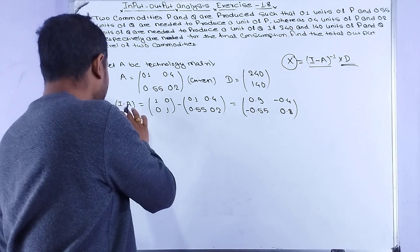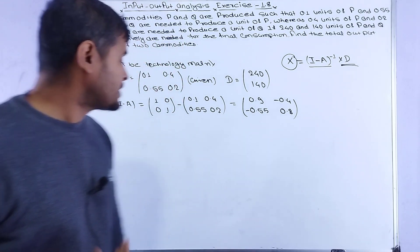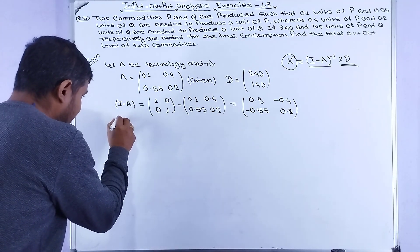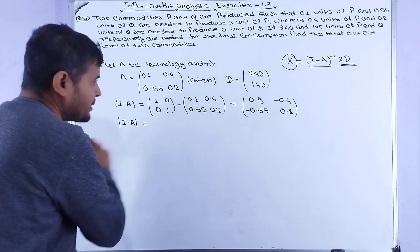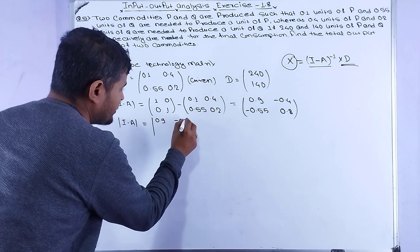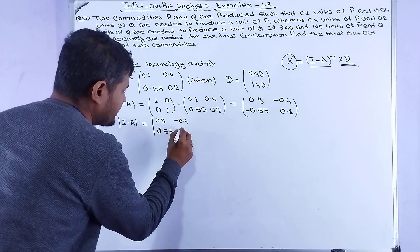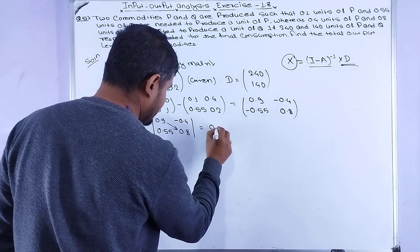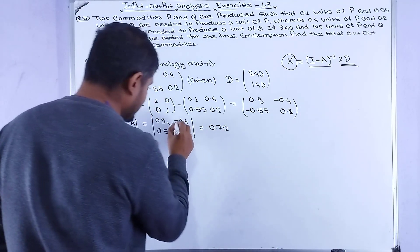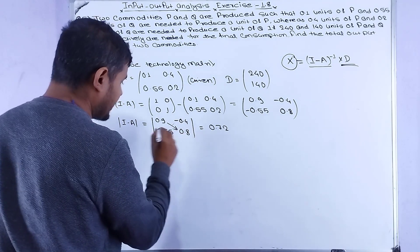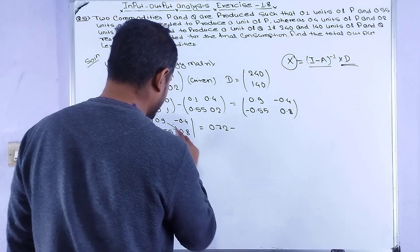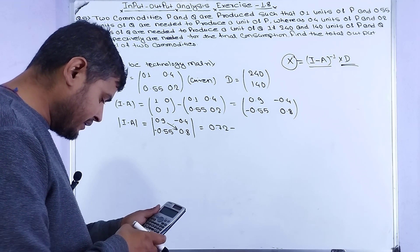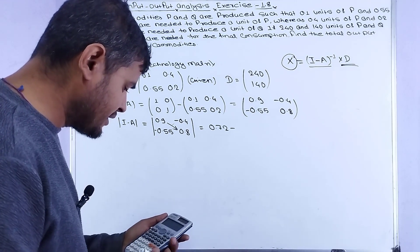Now we need to find the inverse of (I - A). First, we calculate the determinant of (I - A). The determinant equals (0.9 × 0.8) minus ((-0.55) × (-0.4)) = 0.72 minus 0.22 = 0.50.